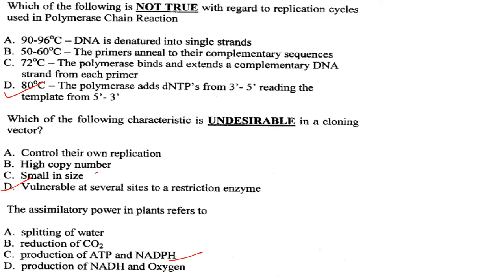Which characteristic is undesirable in a cloning vector? Control of own replication, high copy number, and small size are all desirable. However, being vulnerable at several restriction enzyme sites is undesirable for a cloning vector.